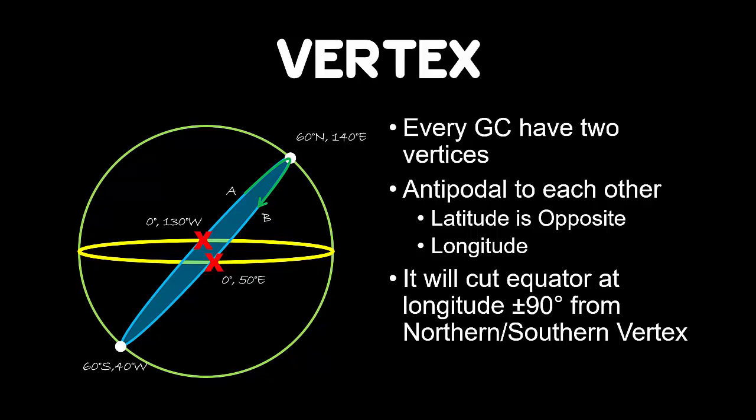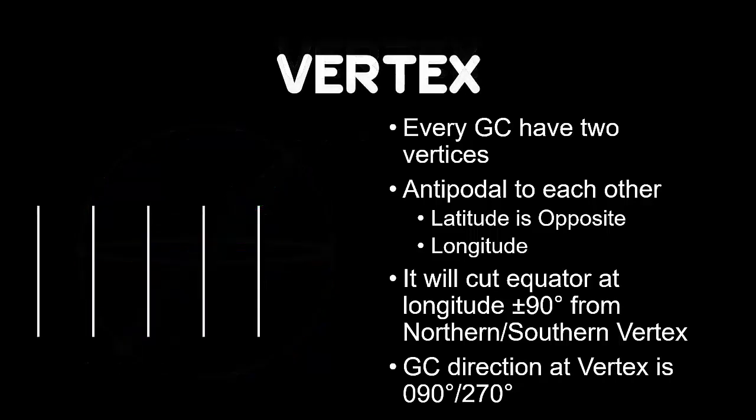The last property of vertex that you need to remember is: great circle direction at vertex is 090 degrees or 270 degrees. To better visualize this situation, the white line represents meridian and green line represents great circle track. If you look closely at all these positions, the great circle cuts the meridian at angle less than or more than 90 degrees, except at this position.